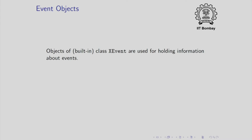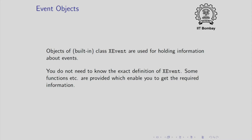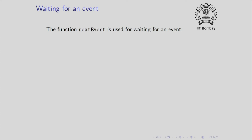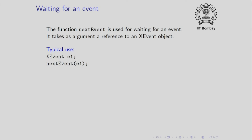In simple CPP, events are represented by objects. We have objects of class XEvent, which is built in, and they are used for holding information about events. You do not really need to know all the details of the class XEvent — you can look at some of its data members. You have functions available by which you can extract information out of an XEvent object. To wait for an event, simple CPP provides the function next_event, which takes as argument a reference to an XEvent object.